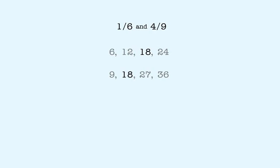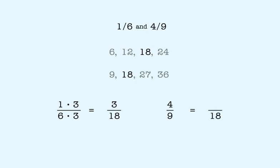Now let's use that as the common denominator to rewrite both fractions. One-sixth becomes three-eighteenths, and four-ninths becomes eight-eighteenths.